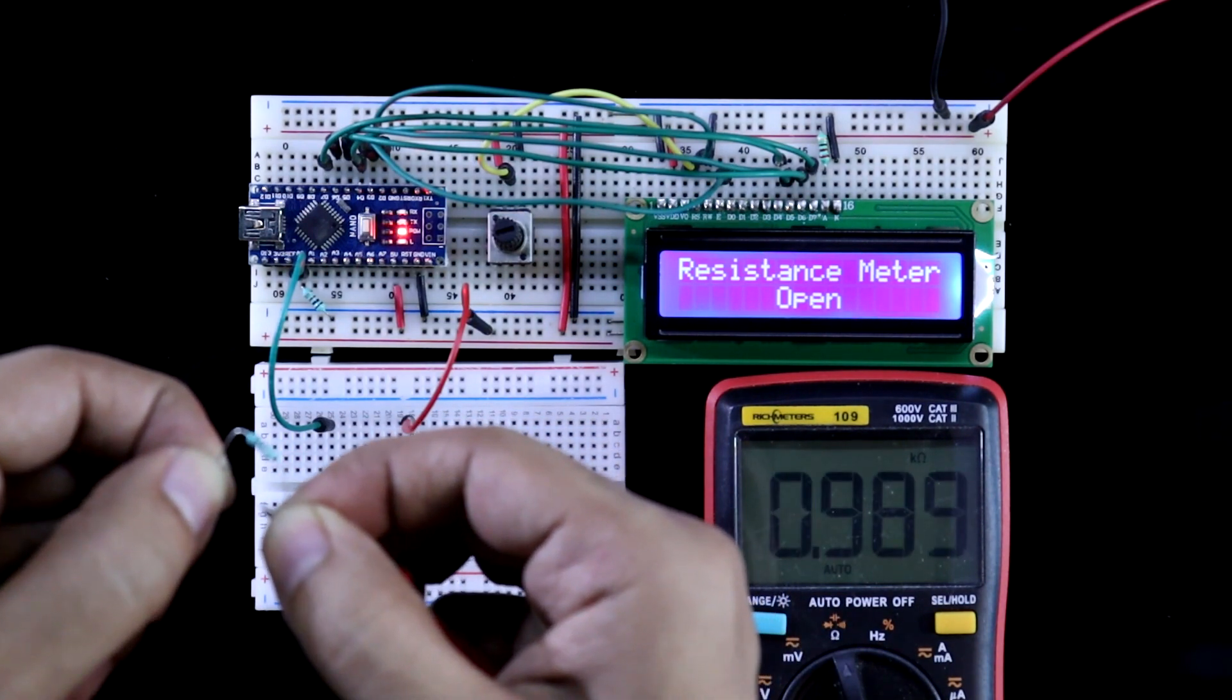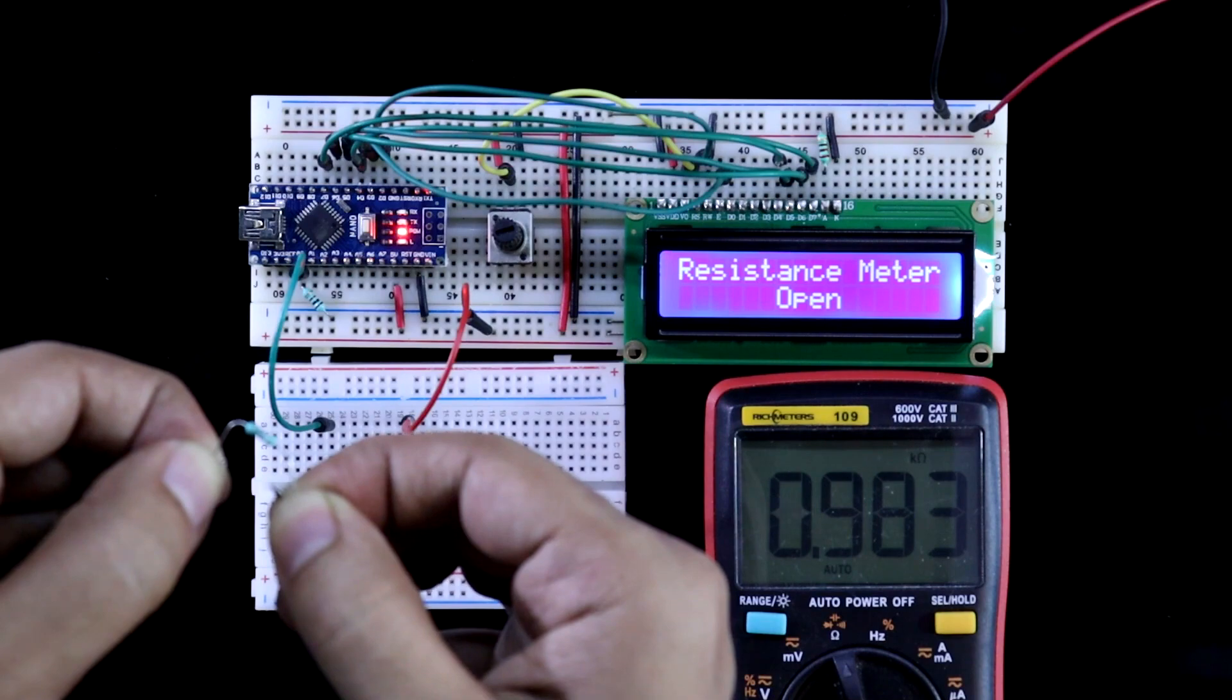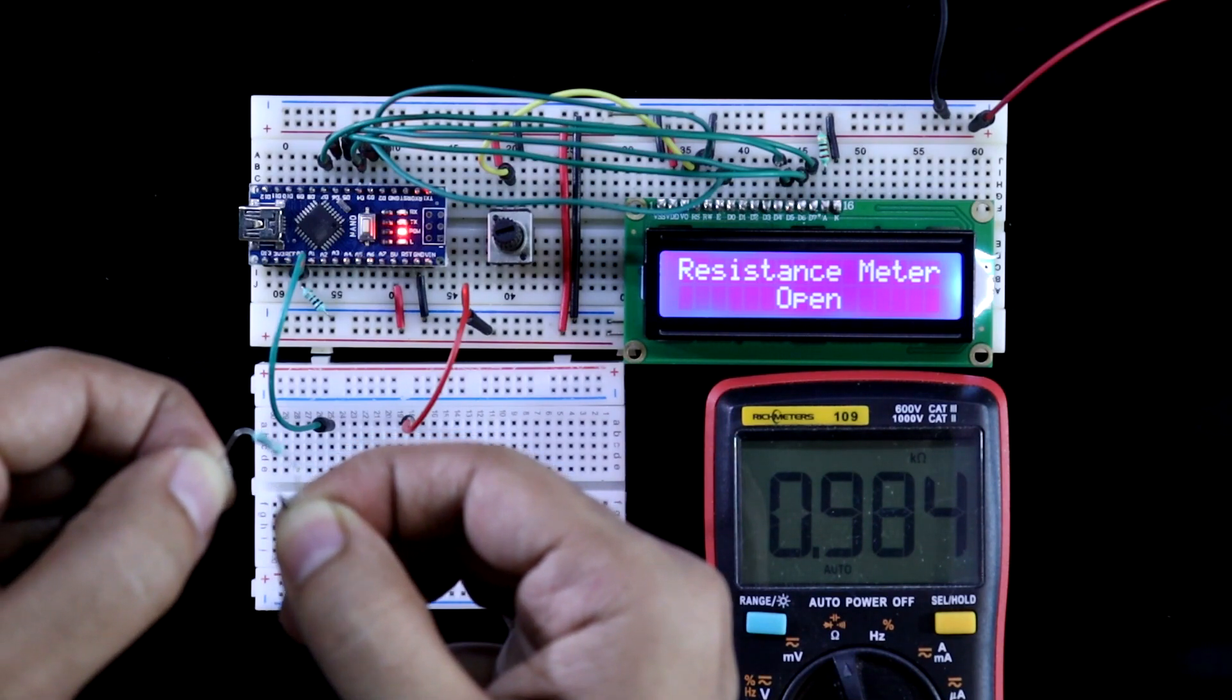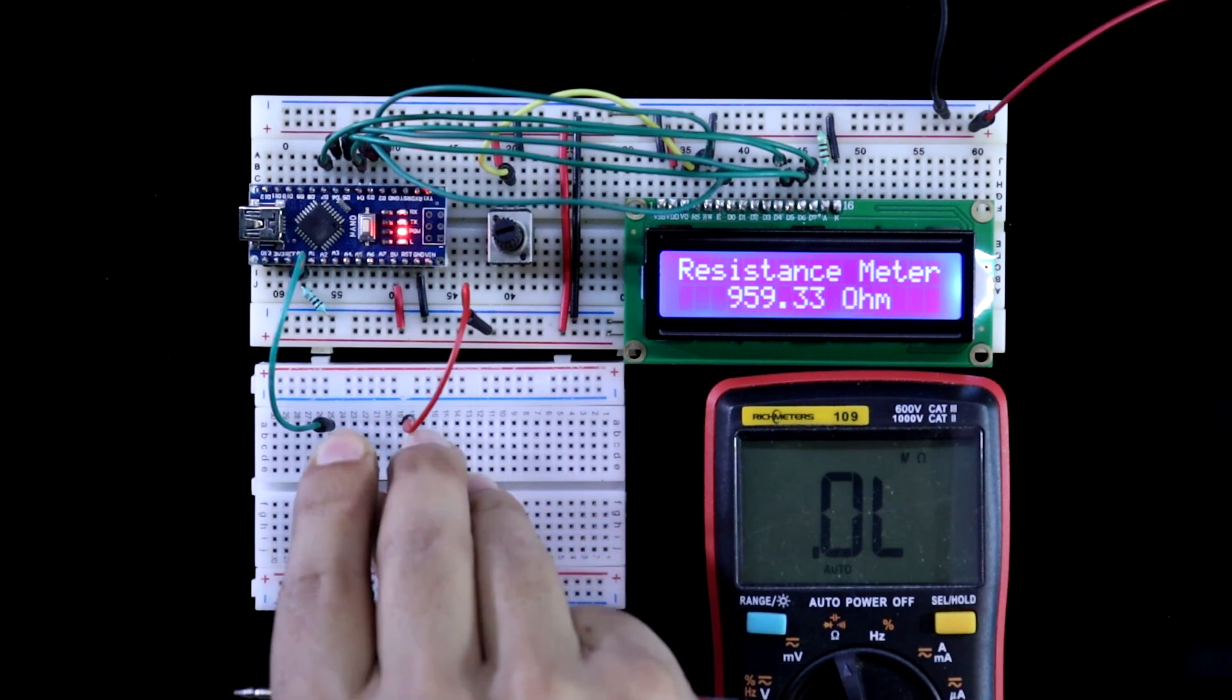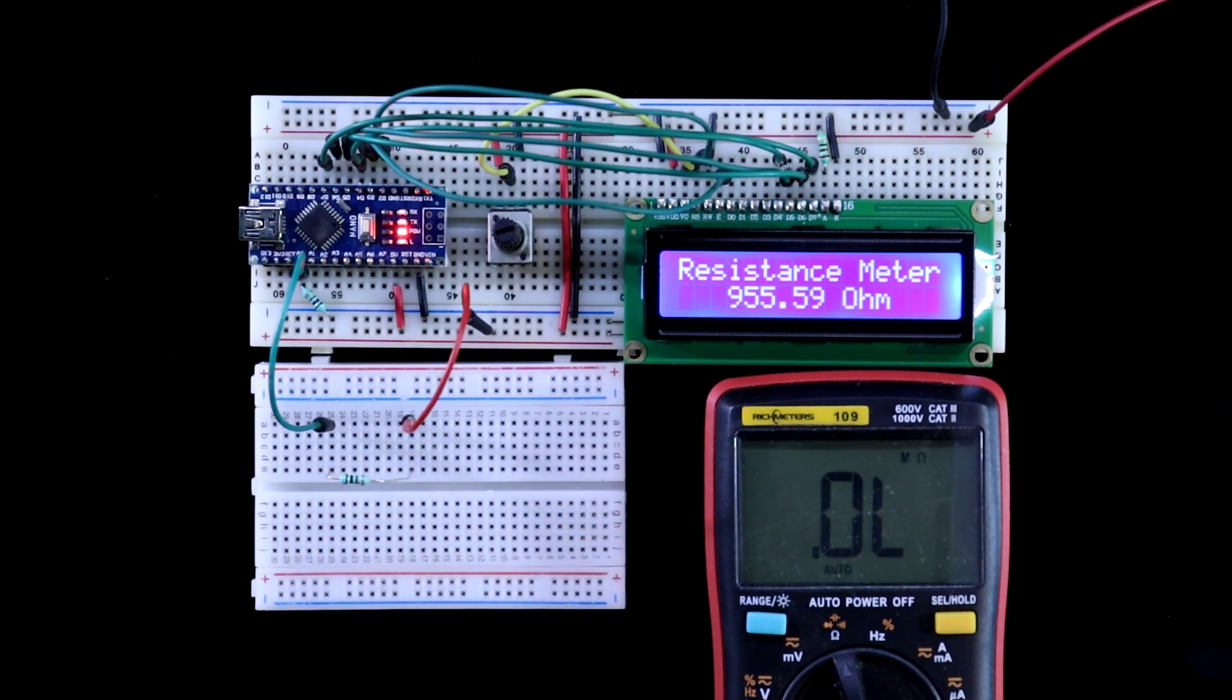Now 1 kilo ohms. And it is showing 983 ohms. 955 ohms. It is also under 5% accuracy.